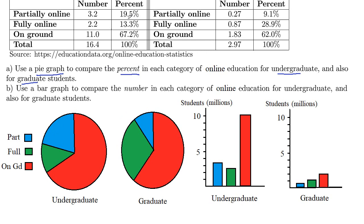19.5% are partially online — that's the blue — so that should be less than a quarter of a circle. A quarter of a circle would be right there, so our blue is a little bit less than a quarter. Our fully online is 13.3%, so that's going to be a little bit more than half of the blue sector. This green sector area is a little bit more than half of the blue.